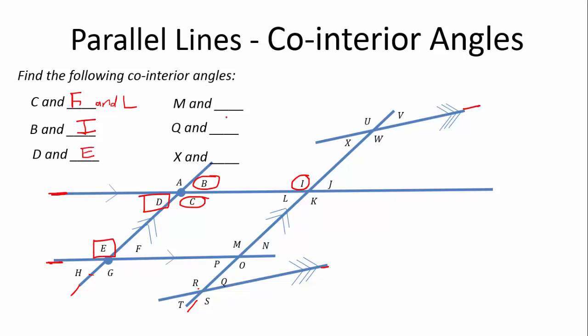What about M? Okay, let's have a look at M. Let's put a triangle over M. Now, M can be co-interior with L if we're looking at these two parallel lines. So, L. And it can be co-interior with F if we're looking at these two parallel lines. So, that can be L and F.